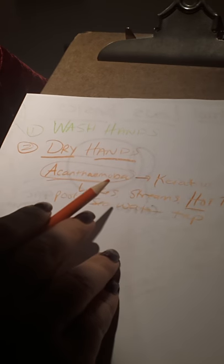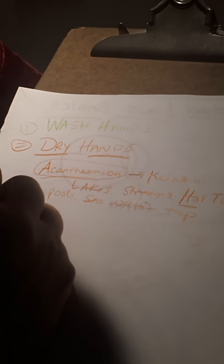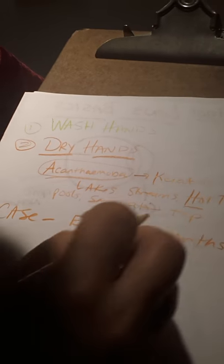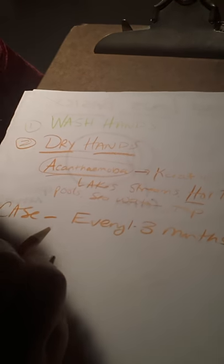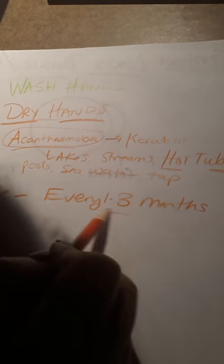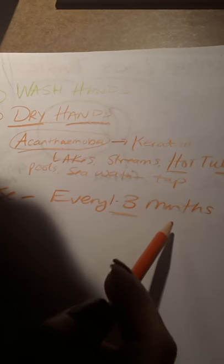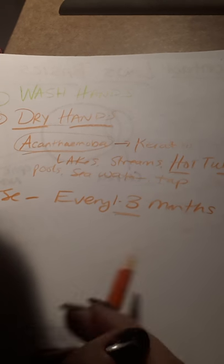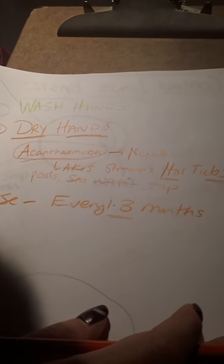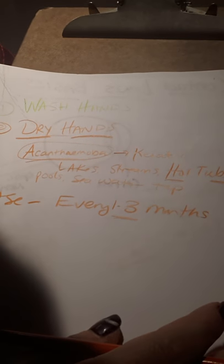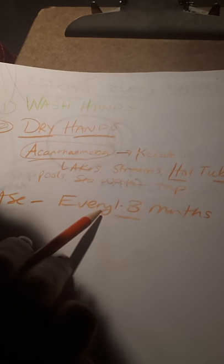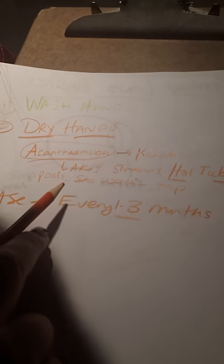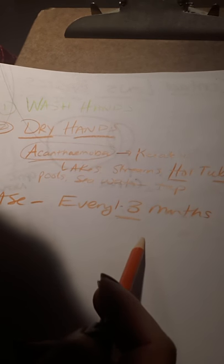This is also why we tell people, throw away your case every three months. If you want to be really diligent, do it every one to three months. But don't ever keep a case for longer than three months. Guys, these things cost 99 cents. You go to Walmart. You go to the contact lens area. They're anywhere from like a dollar up to like three or four dollars.